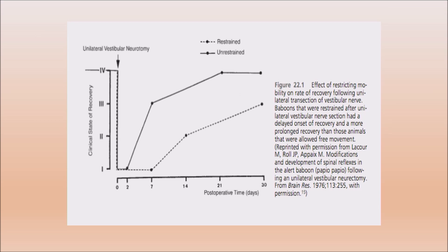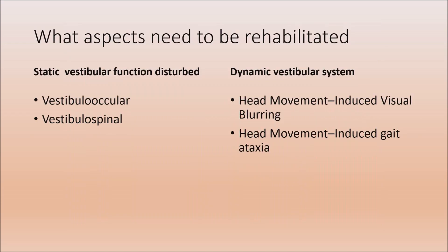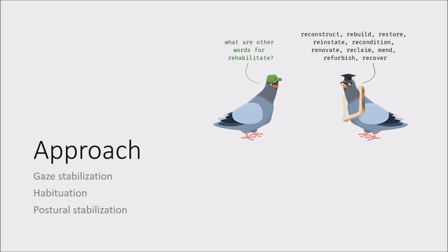There was a study done on humans and also a baboon study. The concept was that you have to make sure the patient gets up and starts doing normal day-to-day activities as soon as possible, because if that doesn't happen, rehabilitation will take time. In the baboon study, the baboon was restricted after a vestibular nerve section and rehabilitation took a long time. The approach to vertigo has to be threefold: gaze stabilization, habituation, and postural stabilization.